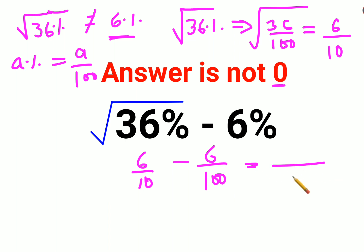So now, here we'll take the LCM to be 100. In order for the LCM to be 100, you will multiply both sides by 10, the numerator as well as denominator. So 10 into 6 gets you 60 minus 6. The answer comes out to be 54 upon 100.